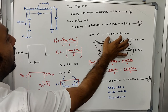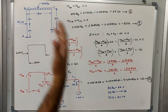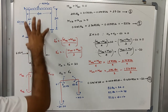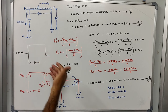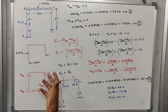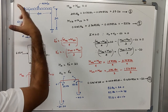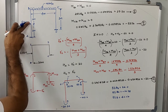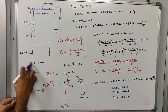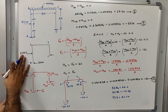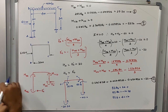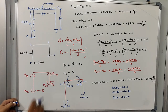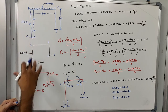To solve the equilibrium equations, we divide the structure into elements treated as simply supported and solve reactions. For column AB with a concentrated load at center, the reaction due to that load alone is 30 kN. For column CD, which has no loading, the reaction from external load is 0.